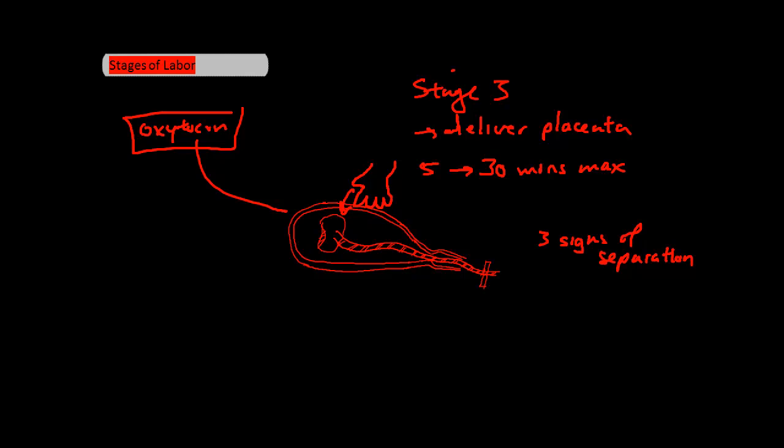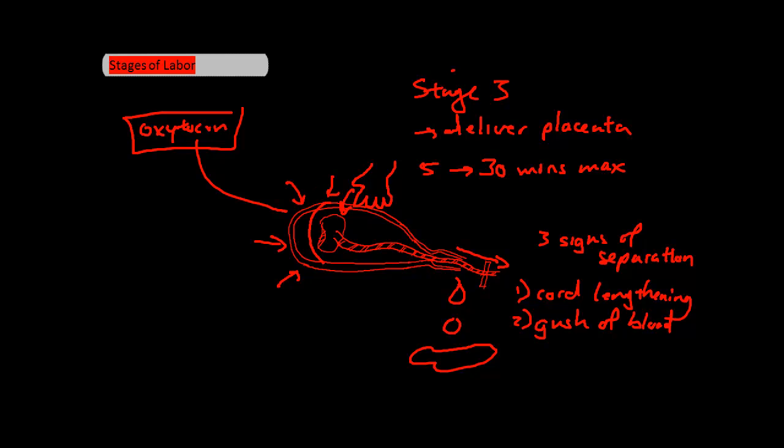These are cord lengthening, a gush of blood - sorry for the graphic drawing - and feeling that the uterine clamps down, i.e. it becomes more of a globular shape than a discoid shape.